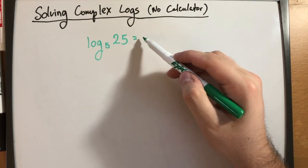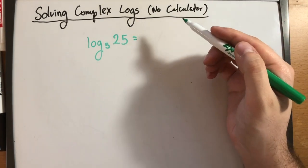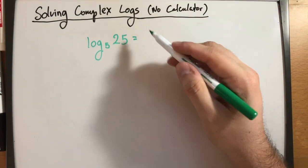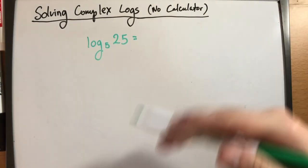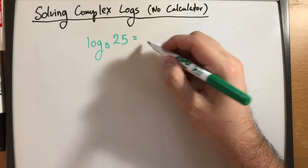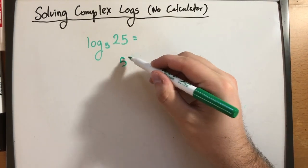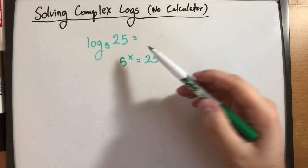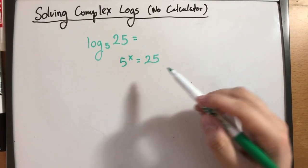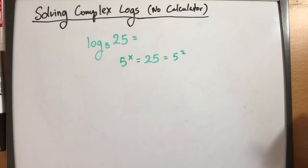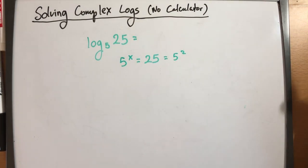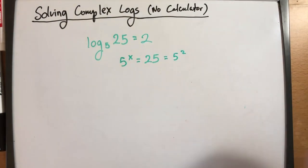I personally like to use x to represent the exponent I'm looking for. You can use any character — question mark, n, x, y, whatever you want. I'm trying to figure out what is that exponent x that I want to raise 5 to so that it's equal to 25. So 5 raised to x is equal to 25. You just have to realize that 25 is just 5 squared. So using mathematical logic, if 5 raised to x is equal to 5 squared, that means the exponent has to be 2. Therefore, the answer is 2, because 5 squared is 25.